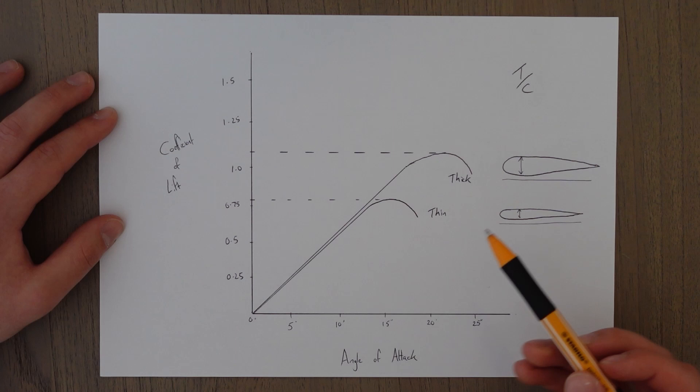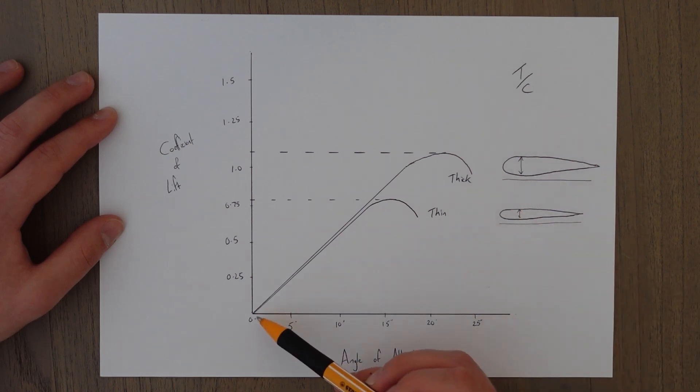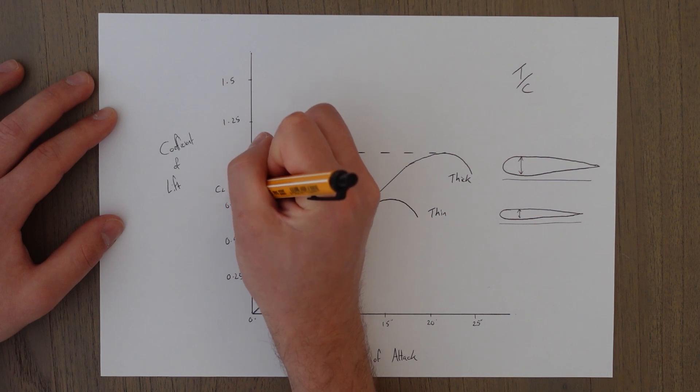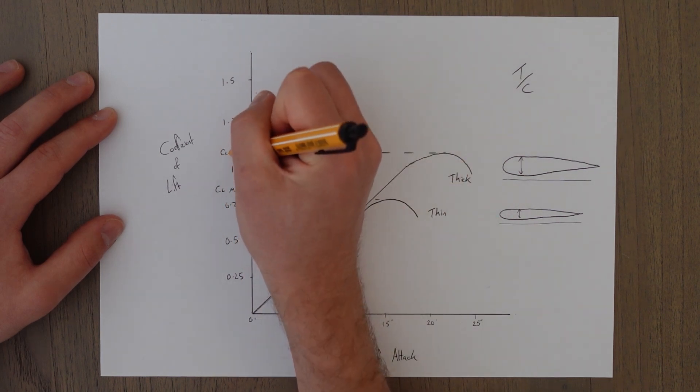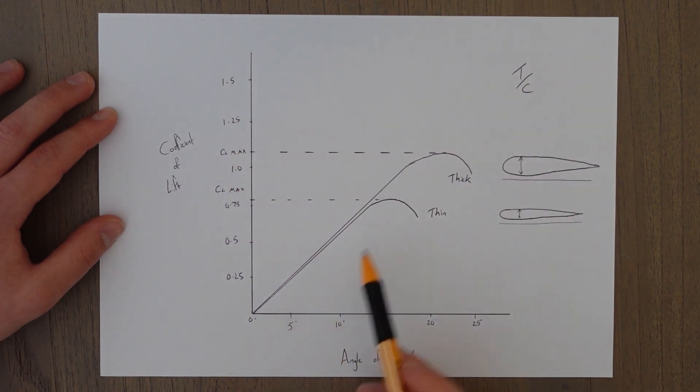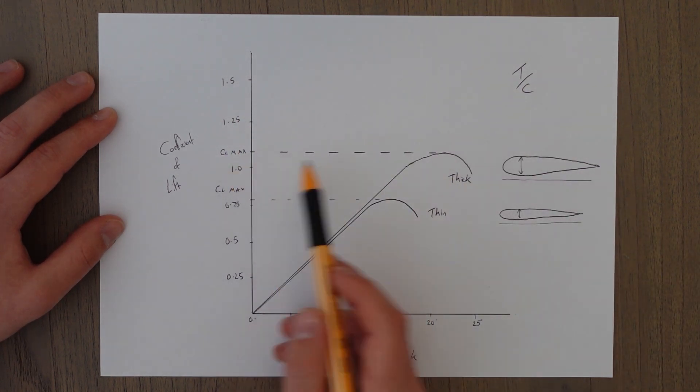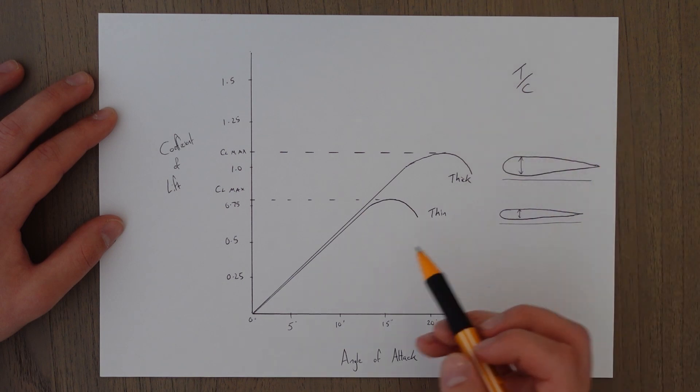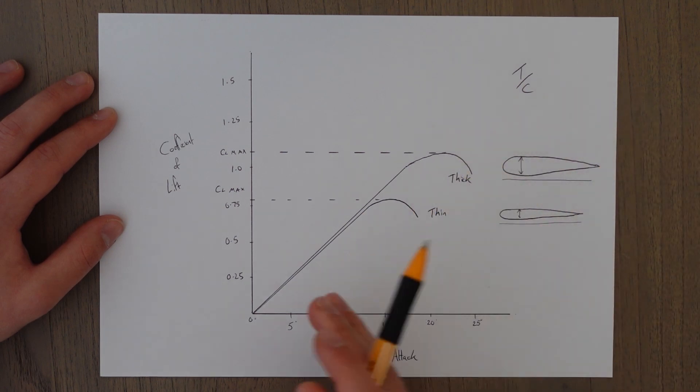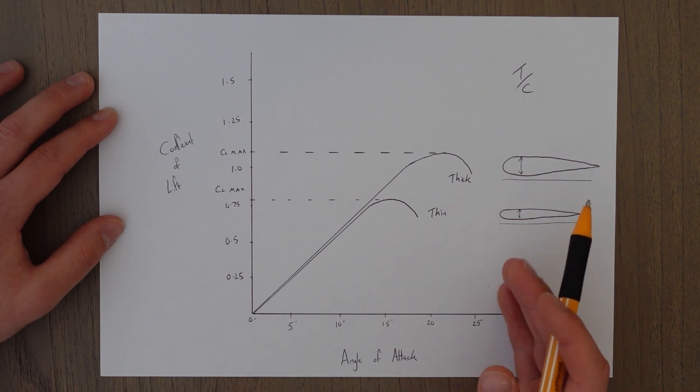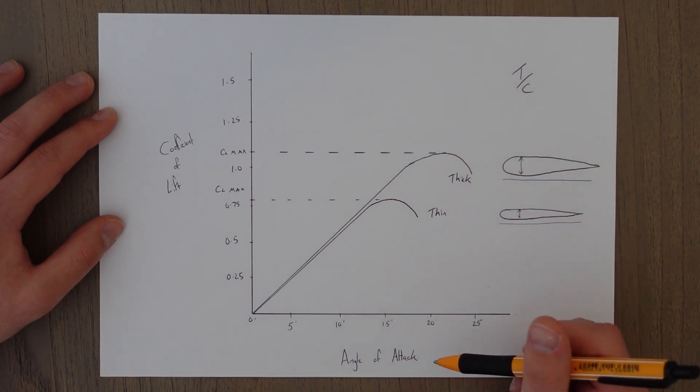As you can see, a thicker wing tends to produce a higher coefficient of lift. These points here again are CL max. So a thick wing overall produces more of a coefficient of lift than a thin wing. Another point to note is that the stall angle also increases. So not only does it go higher but it actually finishes later. So it stalls at a higher angle and produces more lift. So thick wings are good.